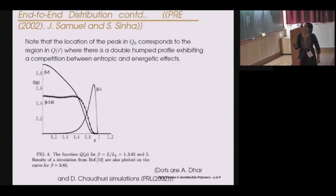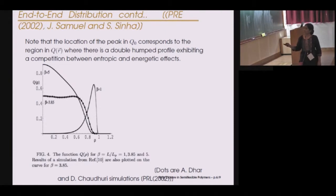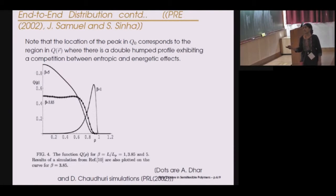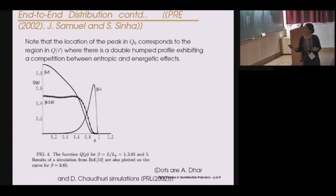Looking back a little bit, in 2002 we had a paper where we noticed a curious double-humped feature of the end-to-end distance distribution precisely at this intermediate range of rigidity. This has also been corroborated by simulation results from Abhishek Dhar and Debasish Chaudhuri. So this competition between entropy and energetic effects plays a very interesting role.